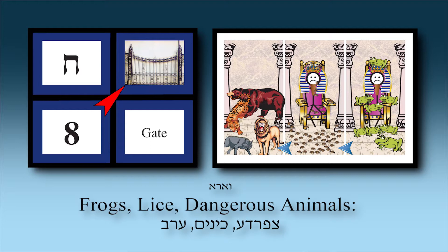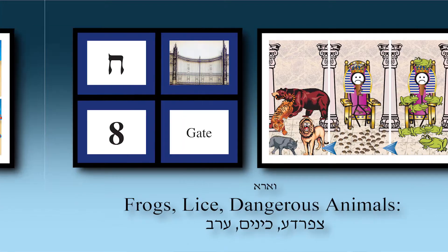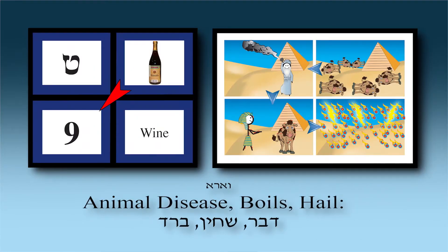Chapter nine — the simon is 'wine.' In chapter nine you've got four pictures.